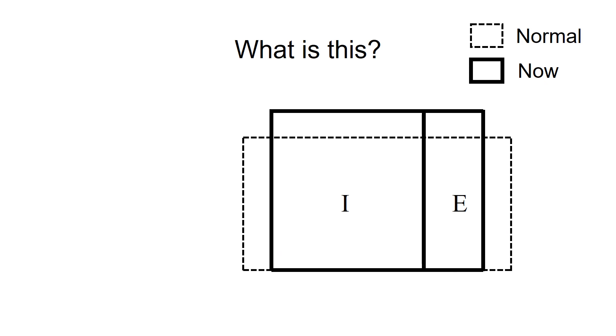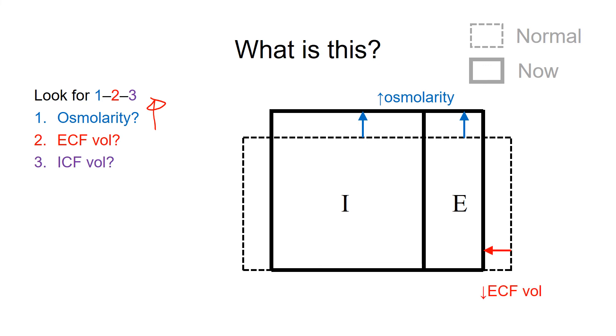Let's practice with another example. In exam questions you may see 'What is this change compared to normal?' How should I approach this? My recommendation is to look for one, two, and three. First, osmolarity—from the dashed box to solid box, osmolarity was increased. Second is ECF—from the dashed box to the solid box, ECF decreased.